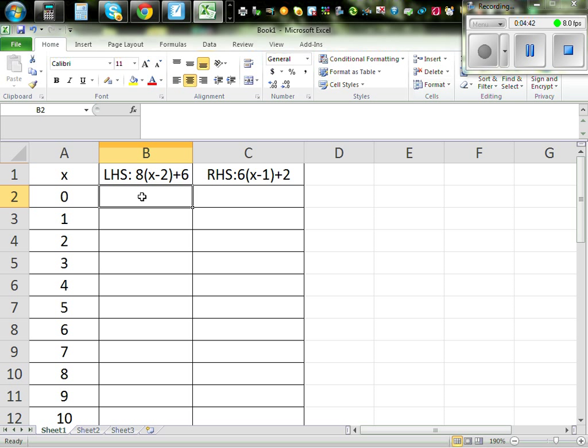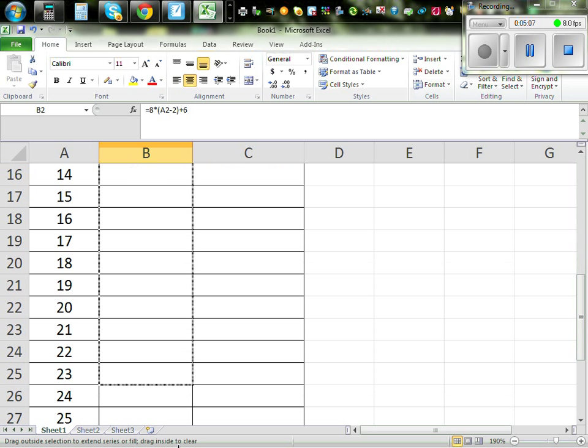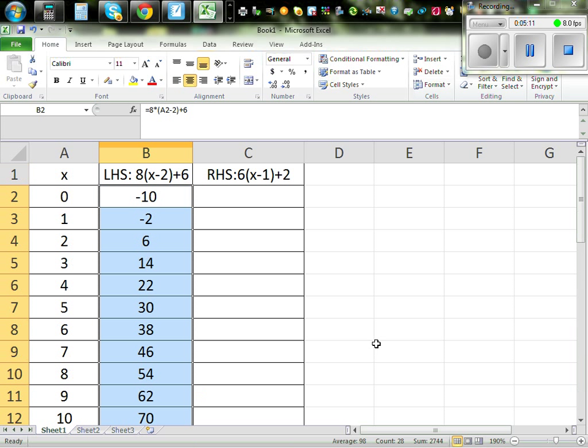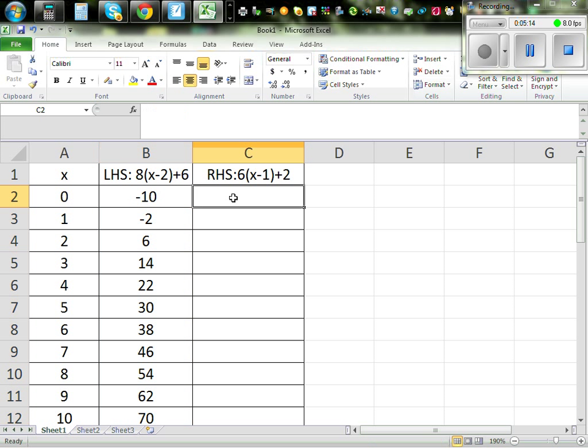Here I am going to use Excel. I'm going to start with equal 8 times, now times in Excel you have to use a star key, bracket your x is this cell which is A2 minus 2 plus 6, enter. So that's negative 10, and then you catch the tail and drag down. When x is 3 the left hand side is 14.